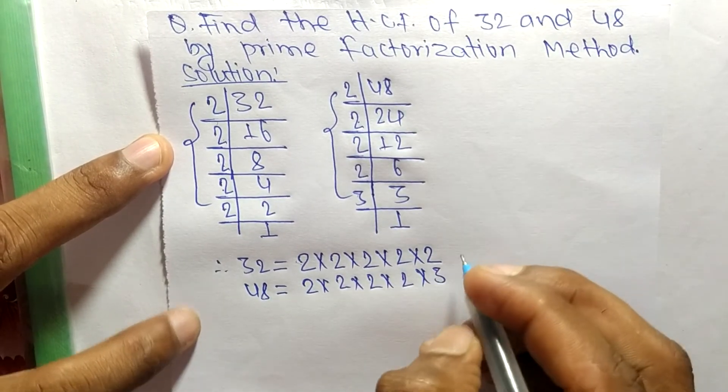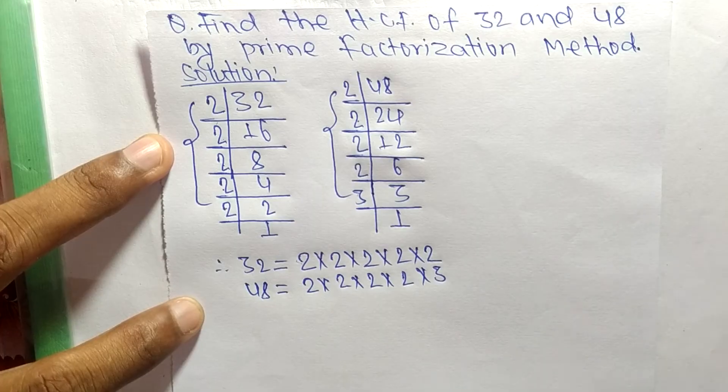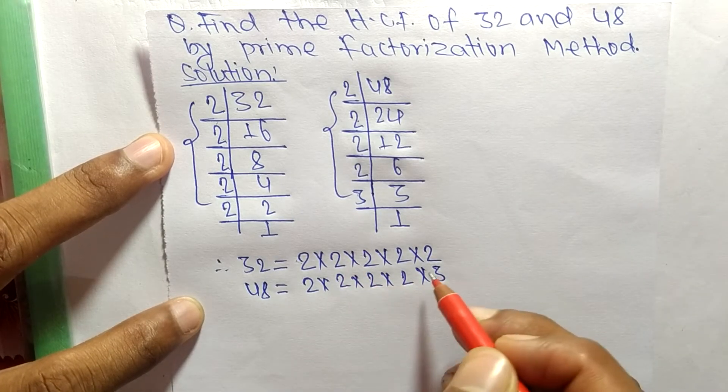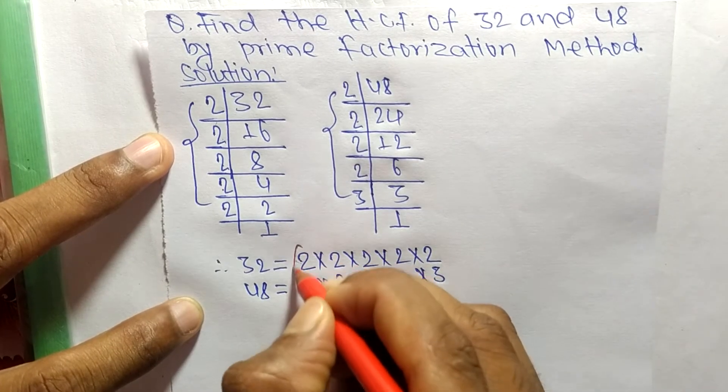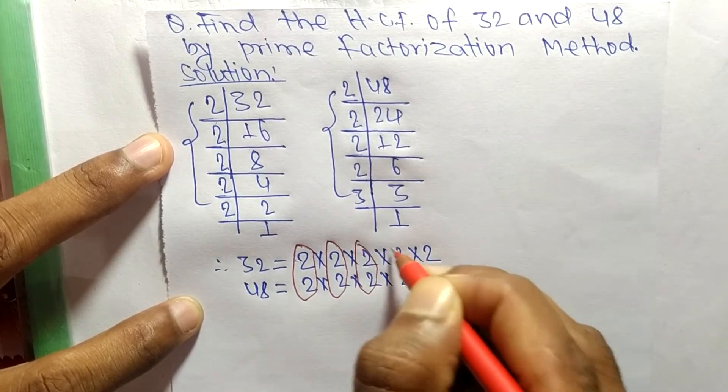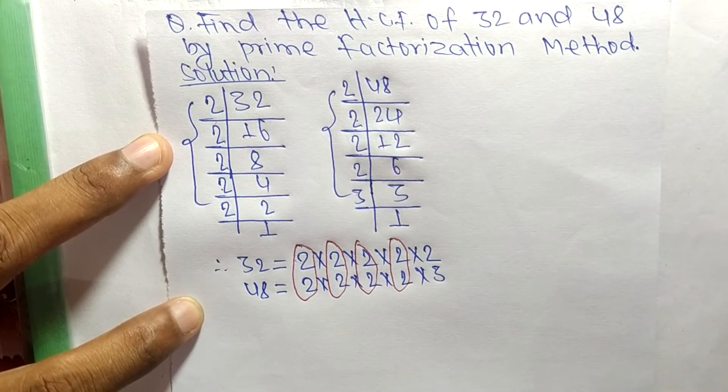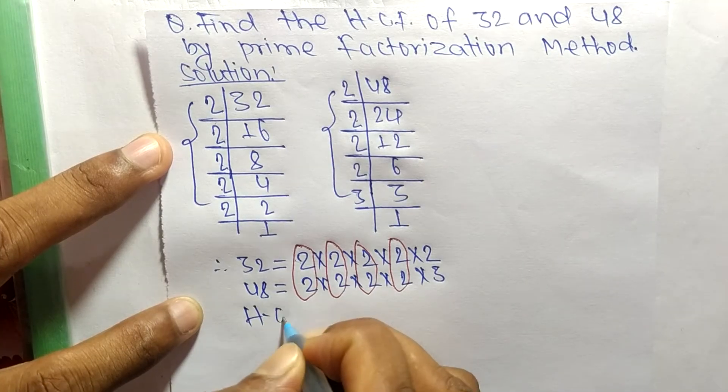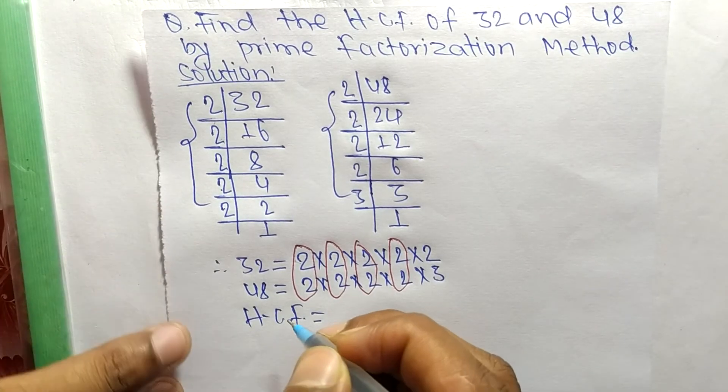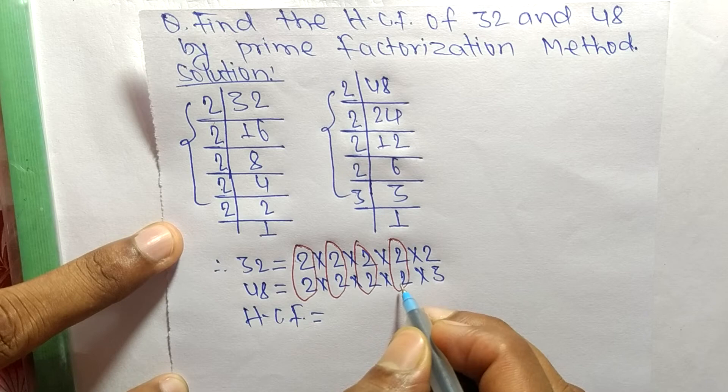Now we have to find out the common factors in this prime factorization. The common factors here are 2, 2, 2, and 2. So the HCF is equal to the product of these common factors.